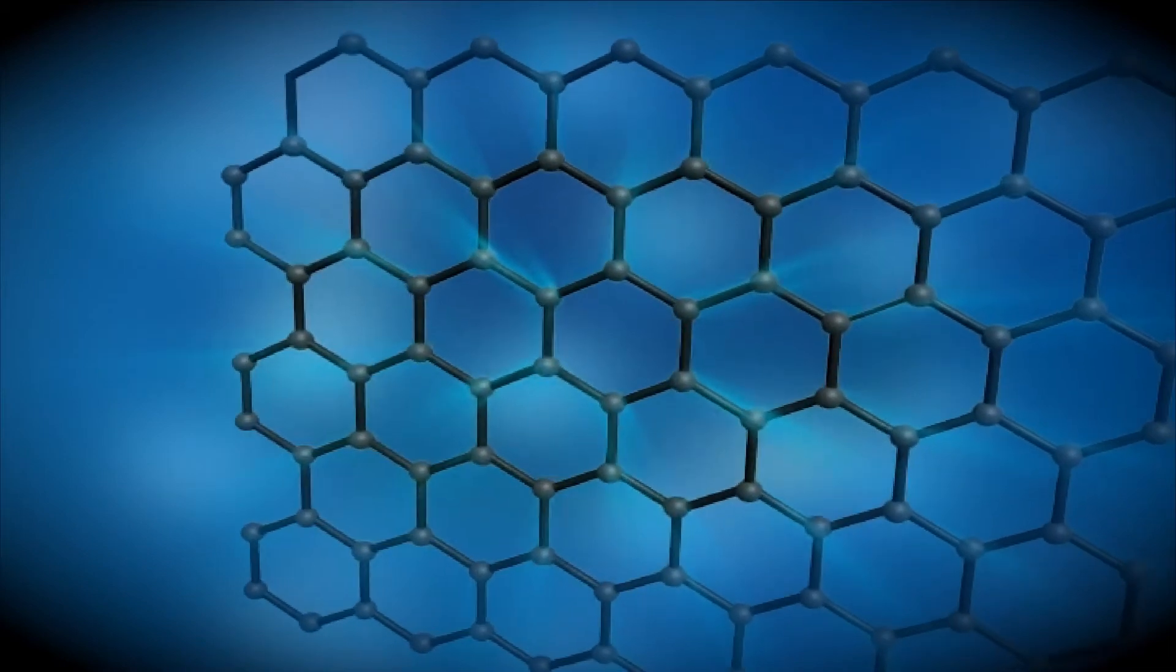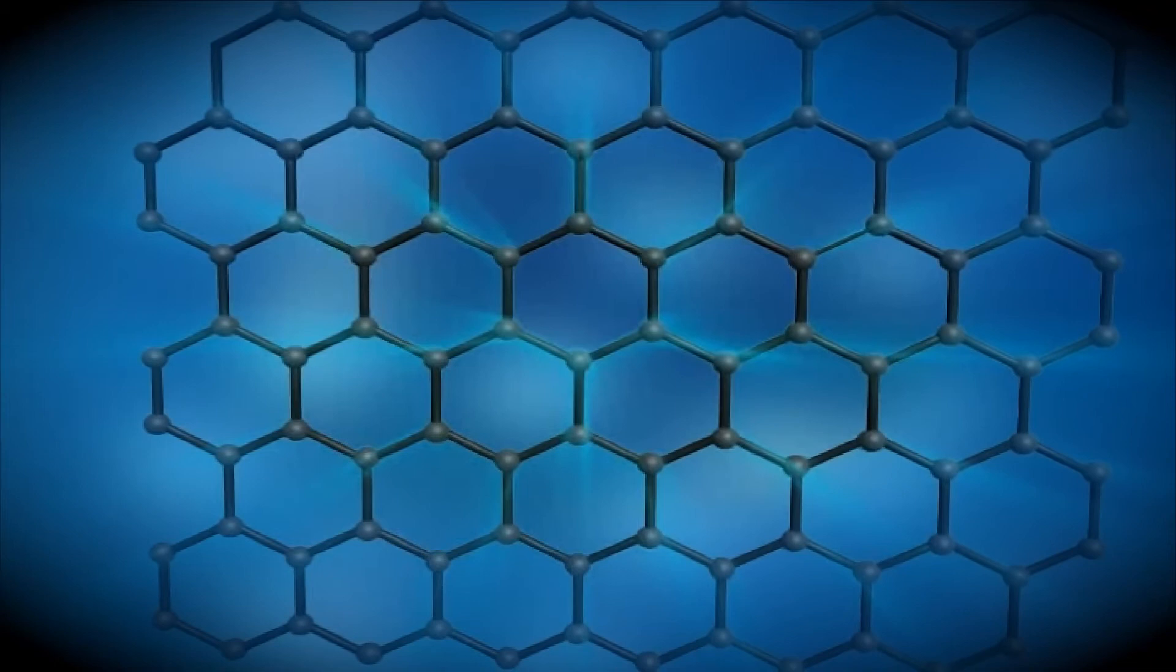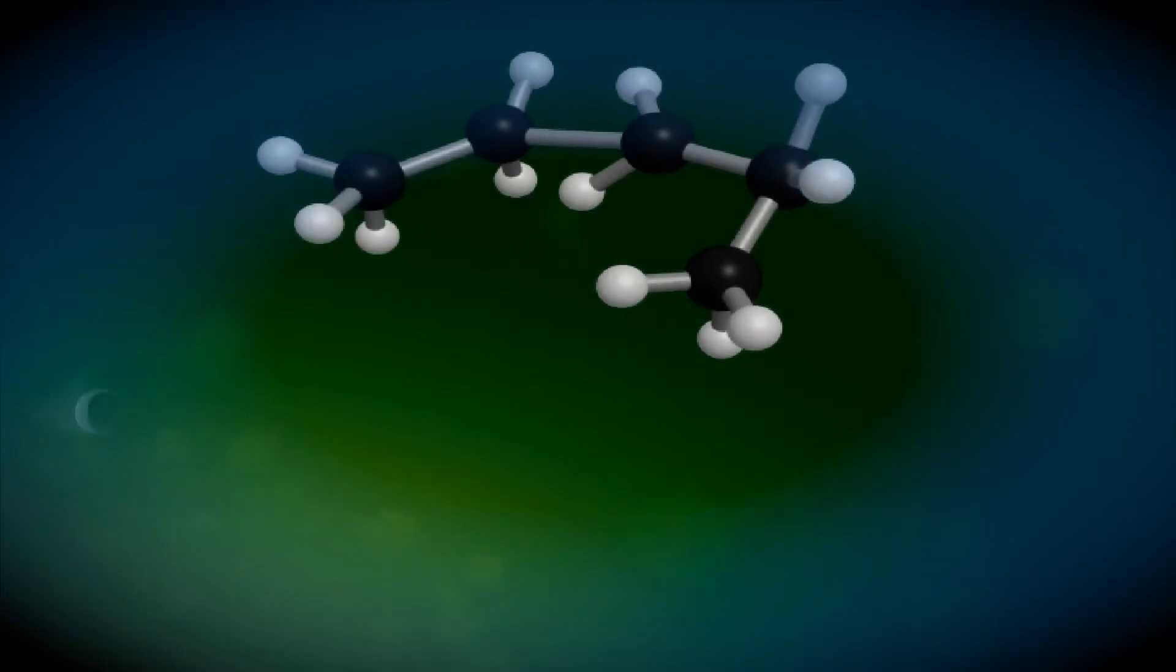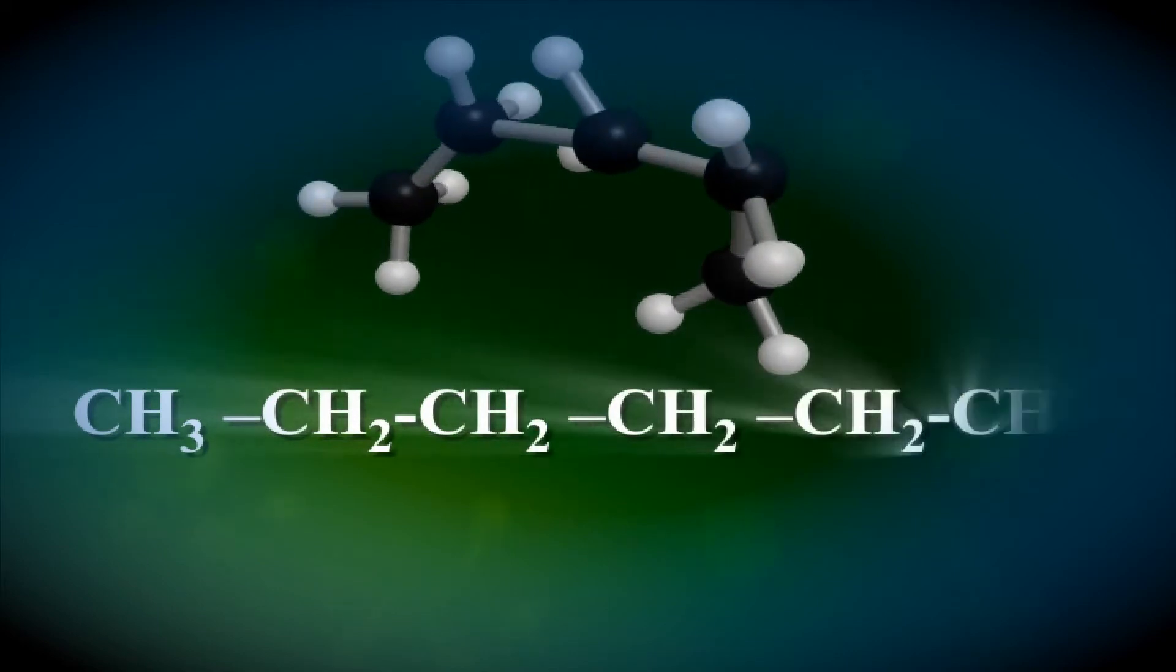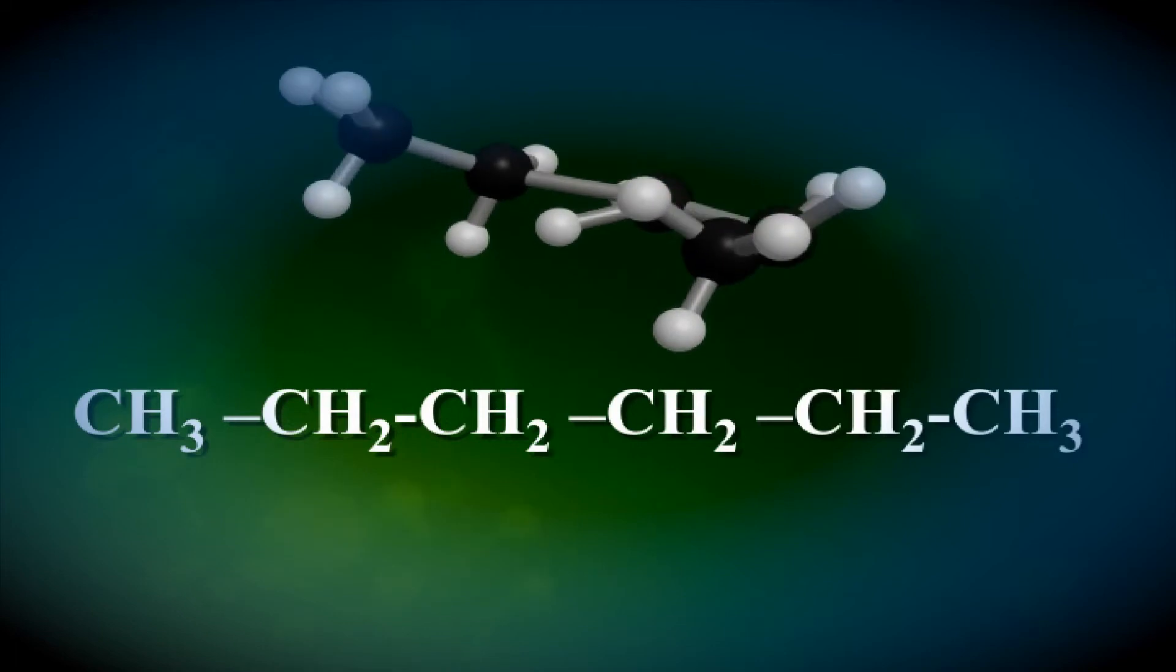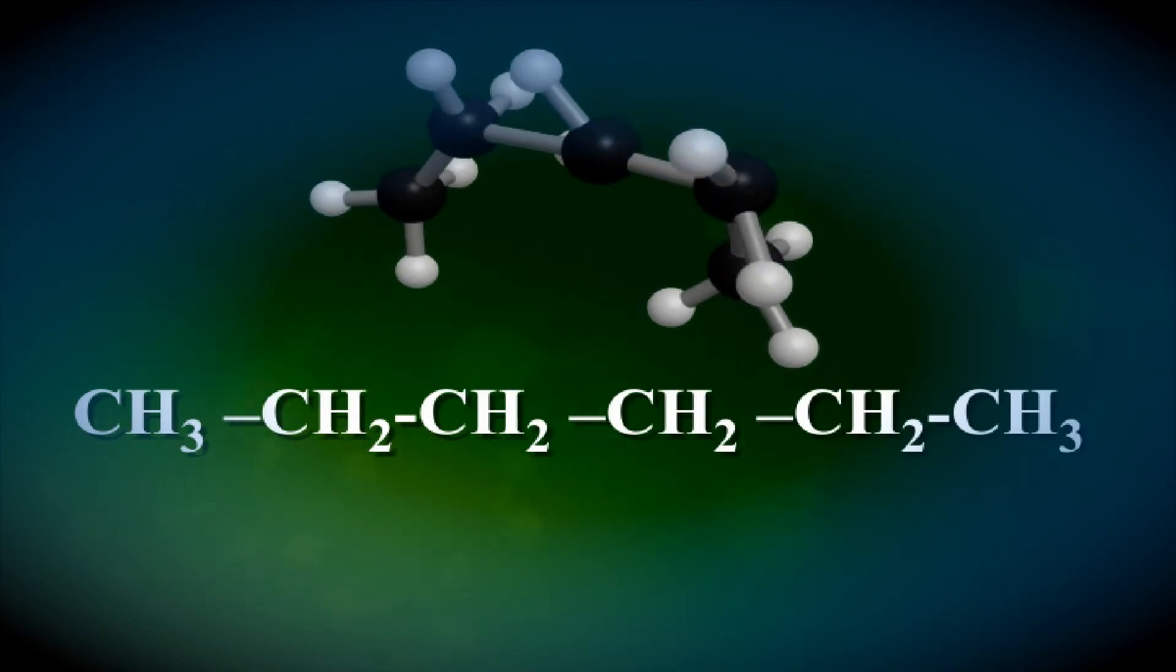The ability of carbon to bond with itself is called catenation. Take for example straight chain compounds of carbon. Here we have normal hexane. All the carbons form chains, again highlighting the phenomenon of catenation.